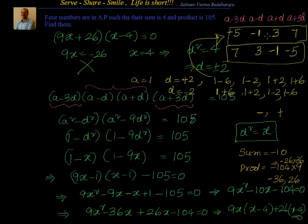Verification: adding them gives 10 minus 6 equals 4, so the first condition is satisfied. Multiplying: 7 times 3 is 21, and 21 times 5 is 105, with minus times minus being positive — so the product condition is also satisfied.